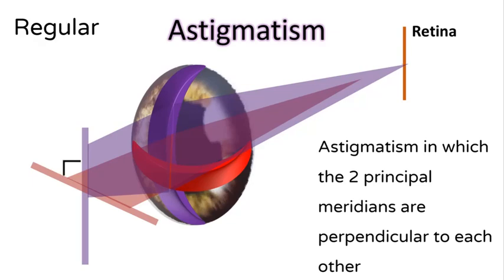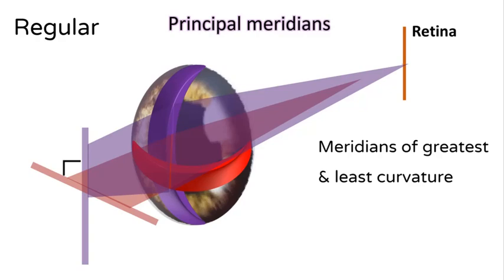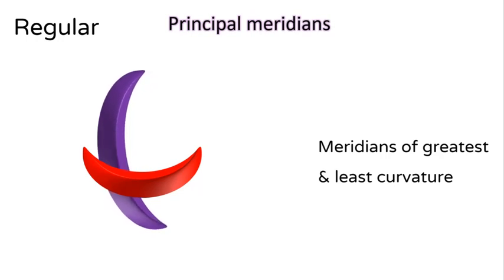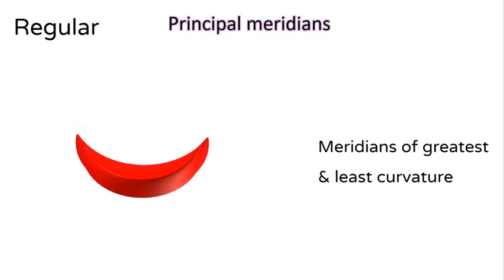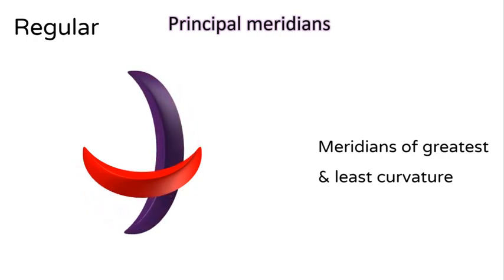Astigmatism can either be regular or irregular. Regular astigmatism is one in which both principal meridians are perpendicular to each other. Principal meridians are the meridians of greatest and least curvature. In this case, the vertical meridian is the least curved surface of the cornea — the flattest meridian — while the horizontal is the most curved or steepest meridian. The other meridians show a gradually increasing curvature from the flattest to the steepest, and a gradual transition back to the least curved meridian.